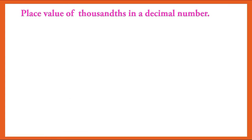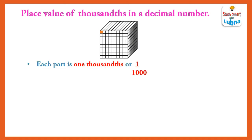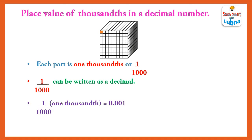Place value of thousandths in a decimal number. Here you can see that this figure is divided into one thousand equal parts. Each part is one thousandth, or one upon one thousand. One upon one thousand can be written as the decimal 0.001.